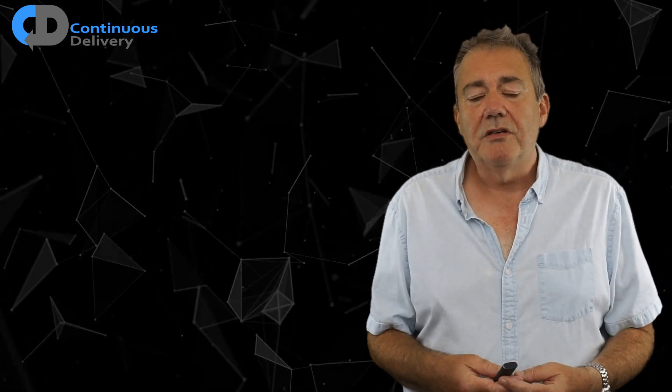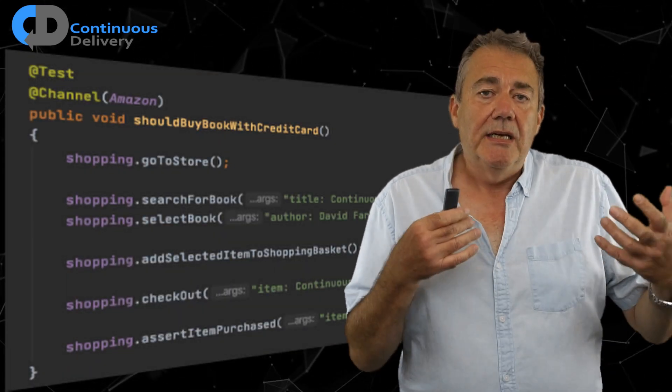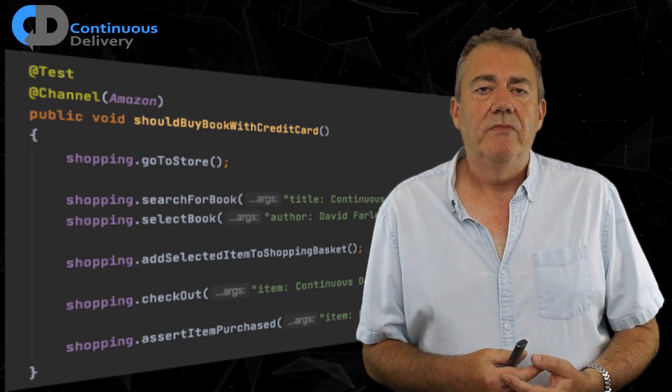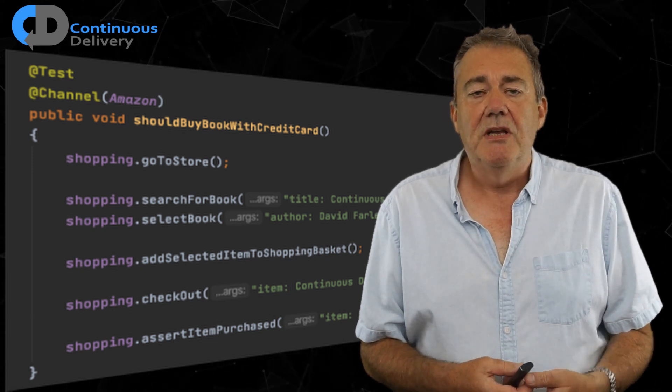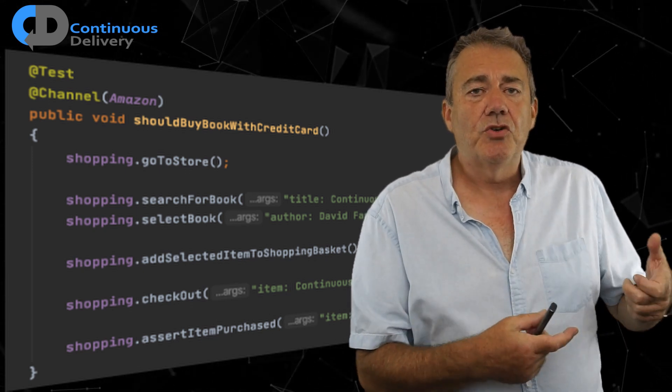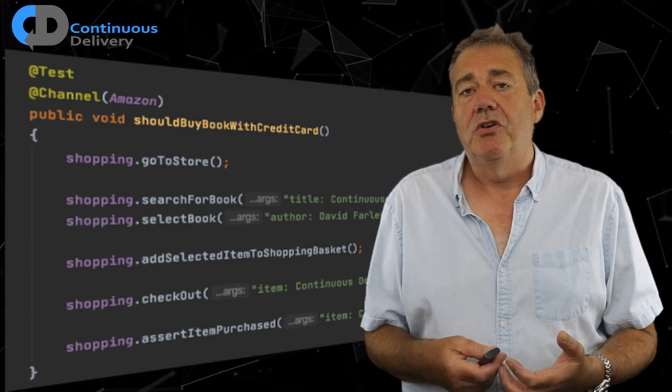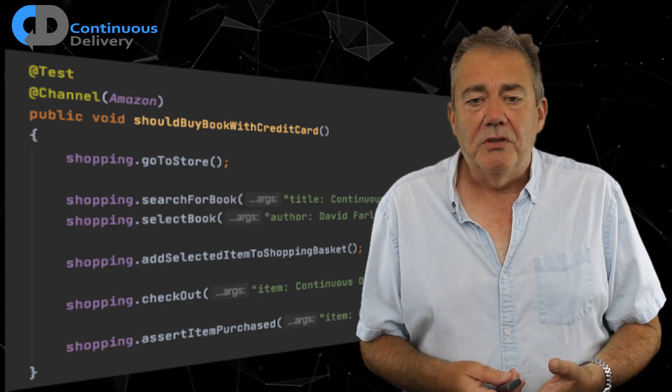Think for a moment about my test case. Consider the example that we've just worked through. Here it is again. Now, read that. What does this have to say about Amazon? It has nothing to say about Amazon. This test case would be equally true of any bookstore. This would even be true of a real world bookstore.